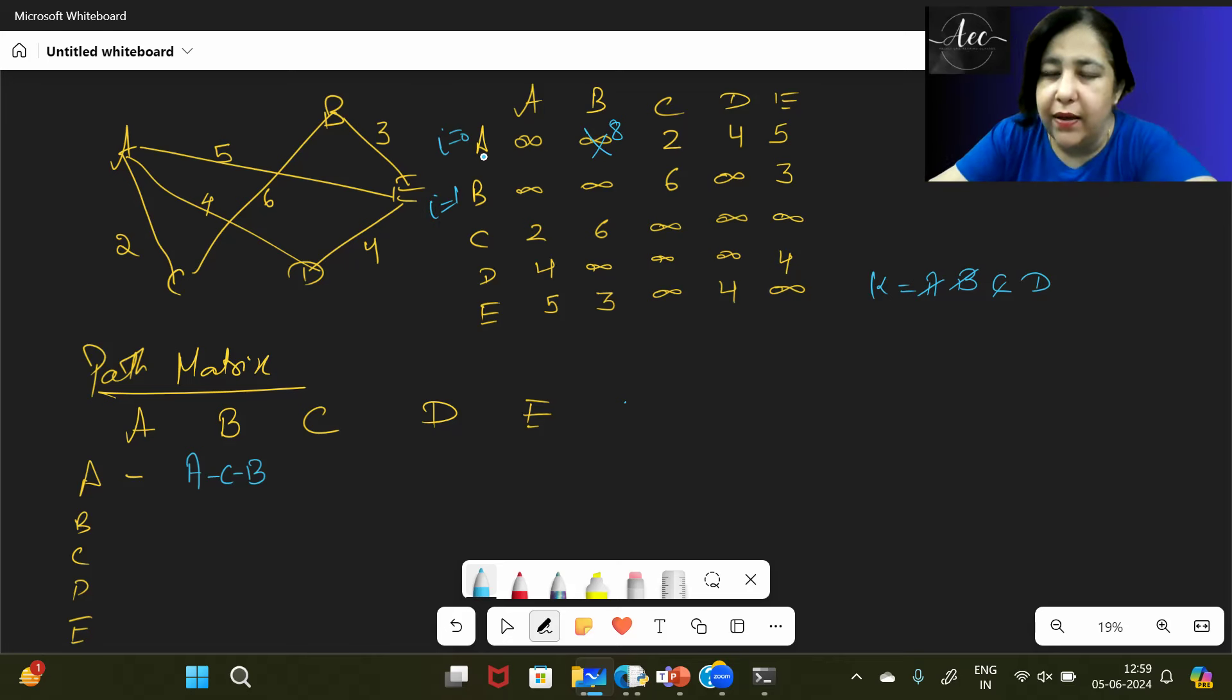Then your i becomes 1. i becomes 1, so where are we now? On B. We are on B, so when we start from here. So B to A is infinite. B to A directly is infinite. But we see if we can reach through some node, so K will be A. When one of the nodes is included, we don't take them, then C comes. Okay, B to C there is a path, yes. Now C to A, C to A also exists, that is 2. So six plus two is eight. So here it will be eight, and here you will get B, C, A.